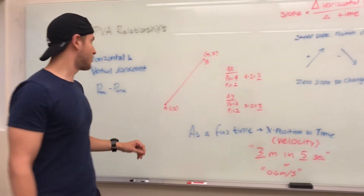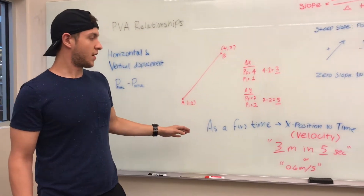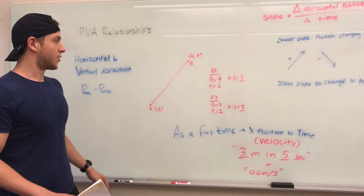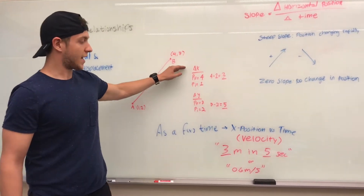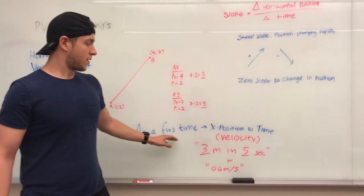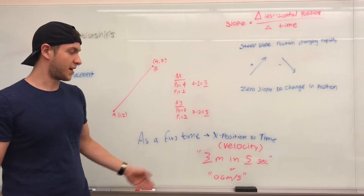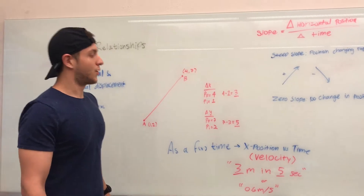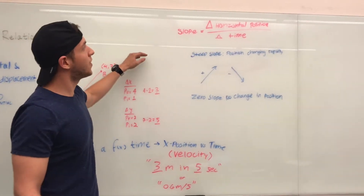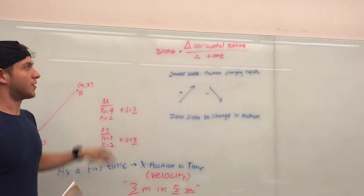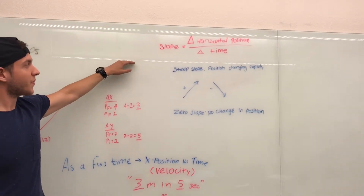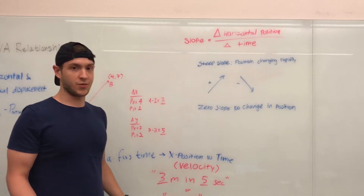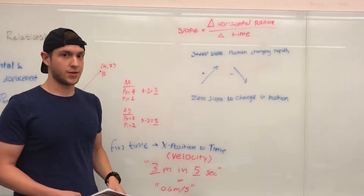Translating that to a function of time, you have position versus time, which gives velocity. Plugging in those values — X is 3 and Y is 5 — you could say 3 meters in 5 seconds, or 0.6 meters per second. Translating that to the slope, you have the change in horizontal position over the change in time. A steep slope, either positive or negative, indicates the position is changing rapidly, while a zero slope means there is no change in position.